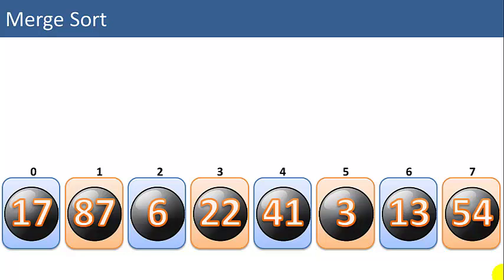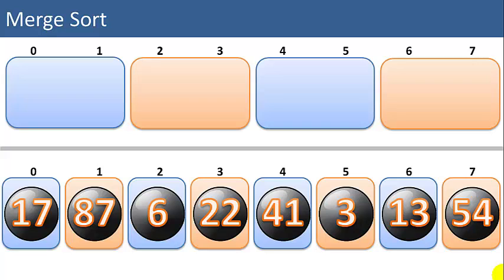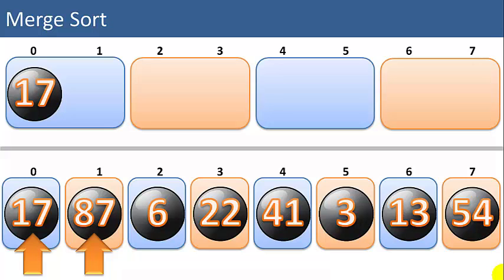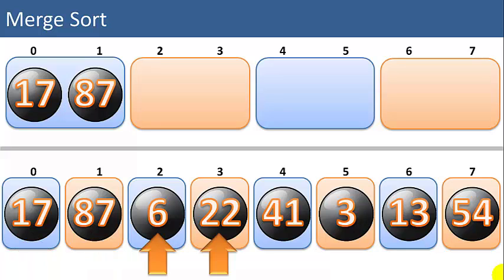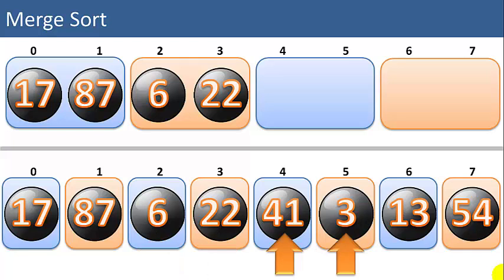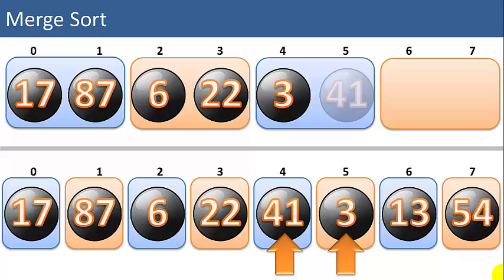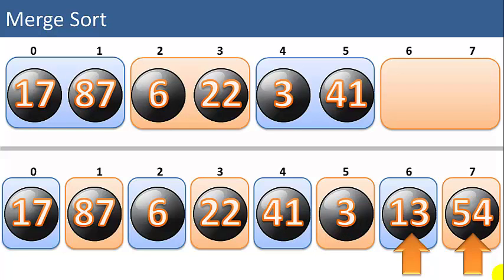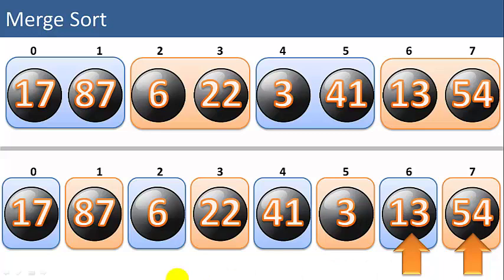That's where the magic comes in for merge sort. We'll start by setting up 4 lists with 2 items each and merge adjacent items. So 17 and 87 — the 17 is smaller, so we'll add that first, then the 87. Now we've merged lists 0 and 1. Next, 6 and 22 — 6 is smaller, we'll add that first, then 22. Then 3 and 41 — 3 is smaller, then 41. And the last two, 13 and 54 — 13 is smaller, then 54. So now we've merged the 8 single-item lists into 4 lists with 2 items each — that's the first stage of the merge sort.